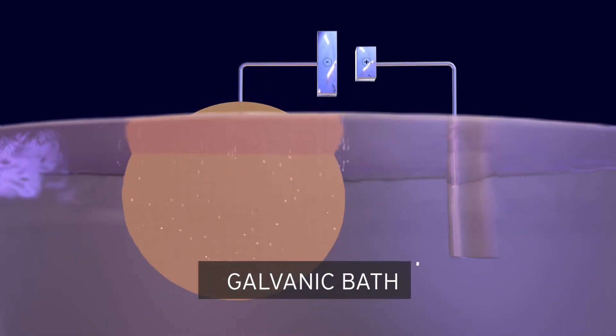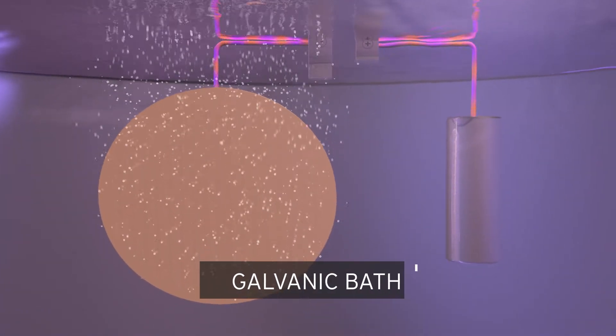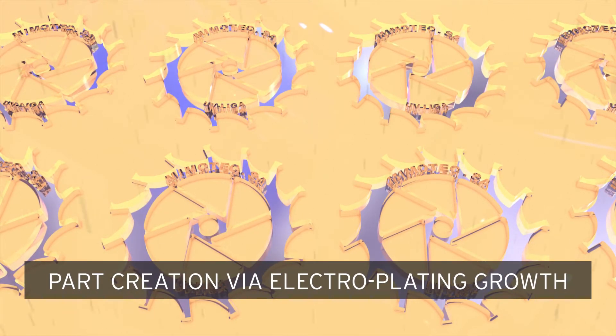The wafer is immersed in a galvanic bath and undergoes voltage in order to start galvanic part growth. Atom by atom, the cavities are filled with metal.